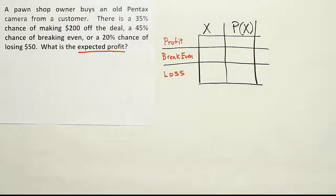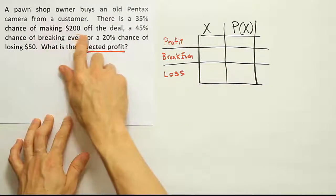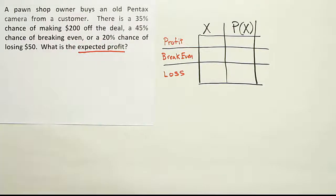Okay, let's go ahead and fill in the dollar amounts that are associated with profit, breaking even, and loss. So it says he has a 35% chance of making $200 off the deal. So that would be the profit, right? He'd make $200.